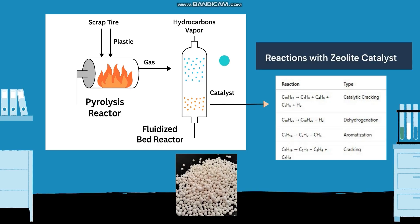Geometry construction is necessary for the simulation. We will then proceed with the meshing part to create the finite volume cells, because the governing equations are solved inside those cells. After that, we will move forward with setup and post-processing in part two of this tutorial. Let's start with the simulation and building the geometry.